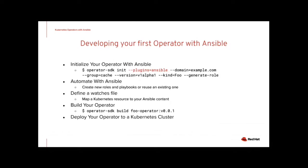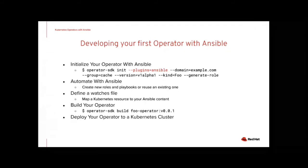Developing your first operator with Ansible is quite straightforward using the SDK. First, you initialize the operator project with Ansible using the init subcommand with the parameter `--plugins=ansible`. Second, you develop your Ansible content to automate the lifecycle of your application or service — the SDK even gives you a means of testing your operator locally using the Molecule test framework. Next, you map a Kubernetes resource in the watches file to your Ansible content. Once you're ready, you run the build command and the Operator SDK will build a container image ready to be deployed to a Kubernetes cluster or published to an image registry.